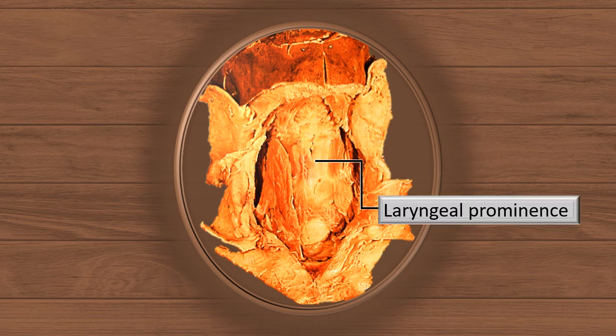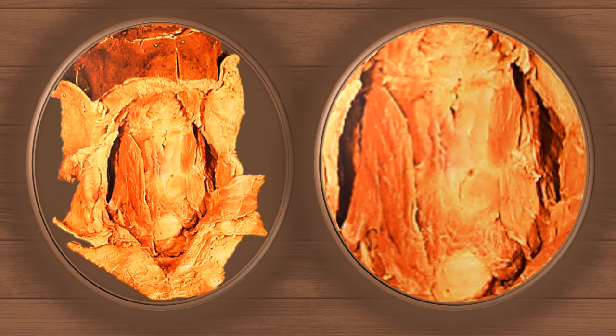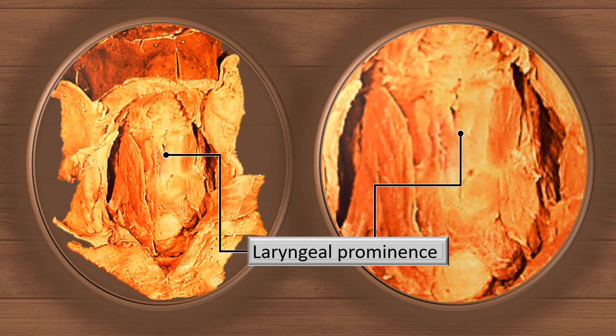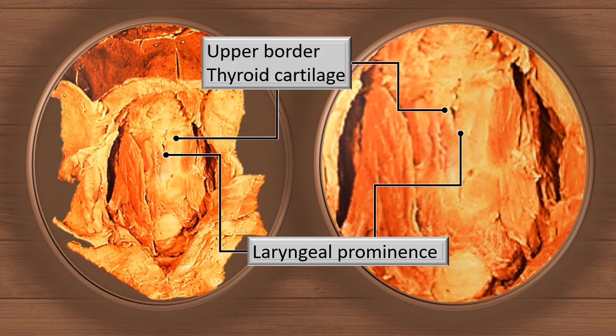Below the hyoid bone, the next prominent structure is the laryngeal prominence or the thyroid prominence, which we have discussed in an earlier discussion on the larynx — it is much more prominent in males than in females. That's the laryngeal prominence, that V-shaped notch. This is a prominence, a part of the thyroid cartilage — the upper border of the thyroid cartilage in the sagittal plane dips down to form this prominence. Down the prominence, the two plates of the thyroid cartilage, right and left, fuse to form the angle of the thyroid cartilage.